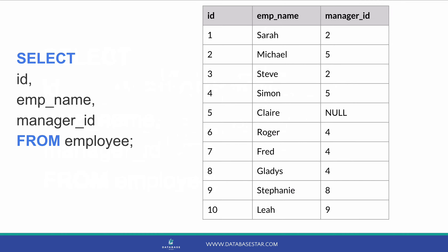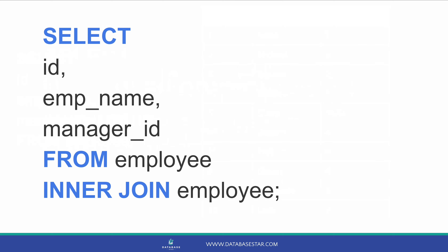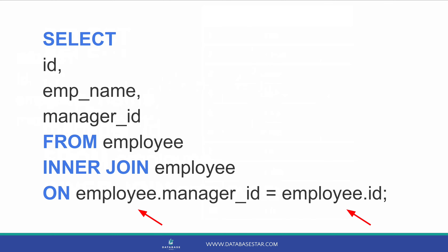But we want to see the name of the manager. The manager is actually a different employee record. If these were in two tables, we would achieve this by adding a join clause, adding the second table and specifying the common fields. A self-join is done in the same way. We add an inner join to the query, and the other table we join to is also the employee table. We want the manager ID in one row to match the employee ID in another row, so we say ON employee.manager_id equals employee.id.